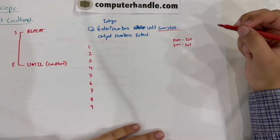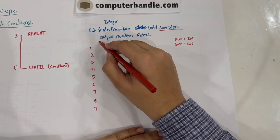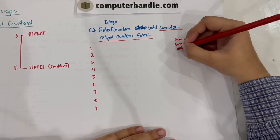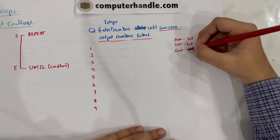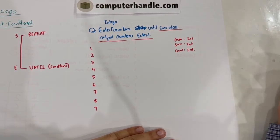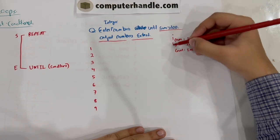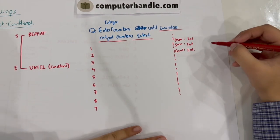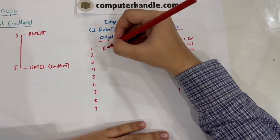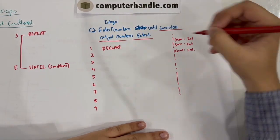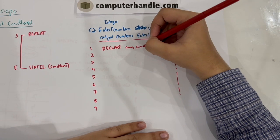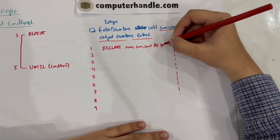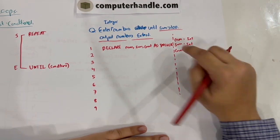This time the question asks us to output the total number of numbers entered, which was not asked in previous questions. Therefore we need a third variable — let's call it 'count' — and declare it as an integer as well. So we declare num, sum, and count as integer.